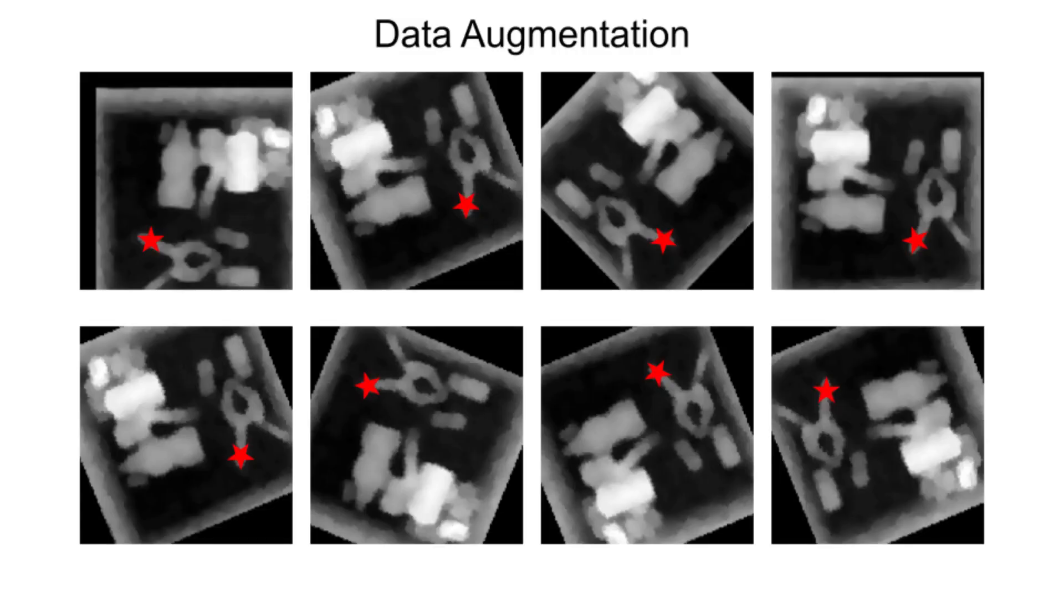After each grasp attempt, the experience is saved in a replay buffer. Augmented data is also saved to the replay buffer. The augmented data is generated by applying random translations and rotations to copies of the image from the grasp attempt. A reflection is also applied to half of these images. The action associated with the image is transformed in the same way.